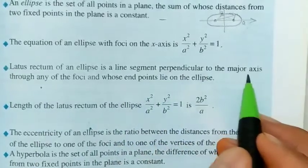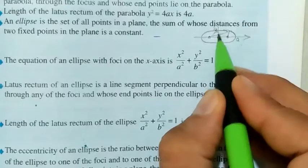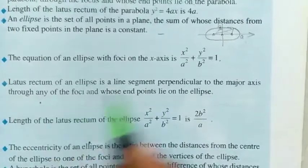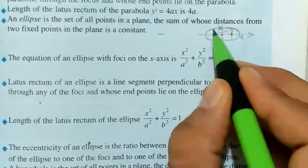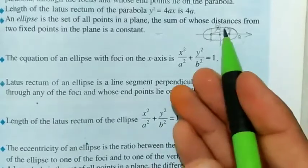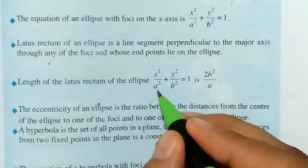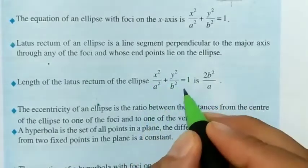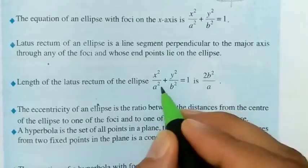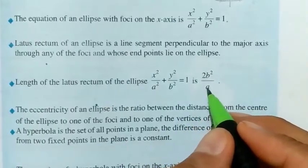The major axis has center O(0, 0) with semi-axis length a, and the minor axis has length b. The latus rectum of the ellipse is a line segment perpendicular to the major axis through any of the foci, whose endpoints lie on the ellipse. The length of the latus rectum of the ellipse x²/a² + y²/b² = 1 is 2b²/a.